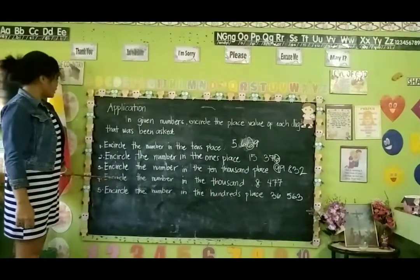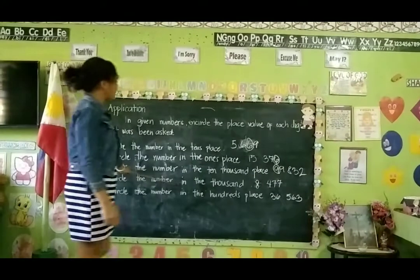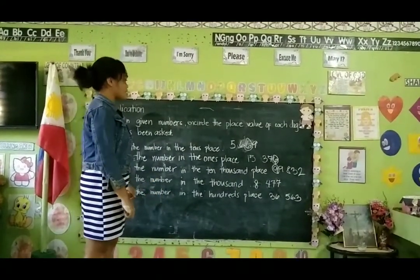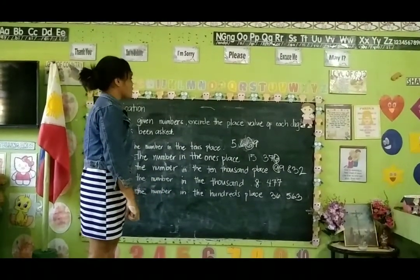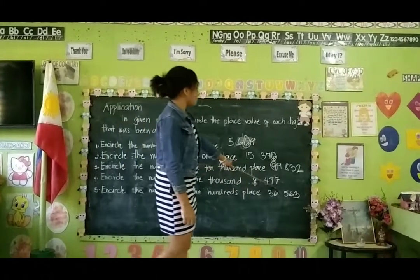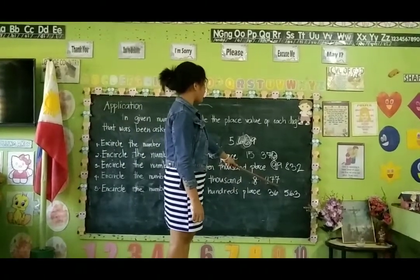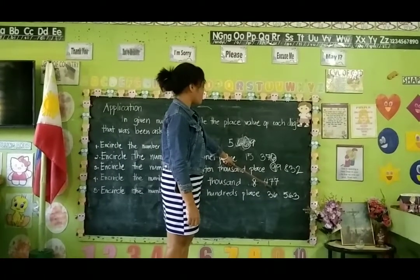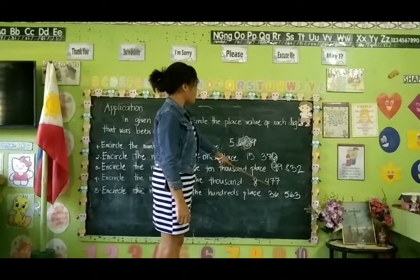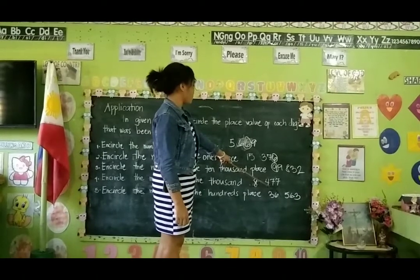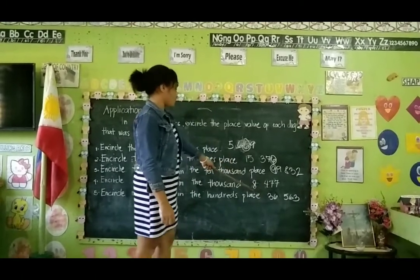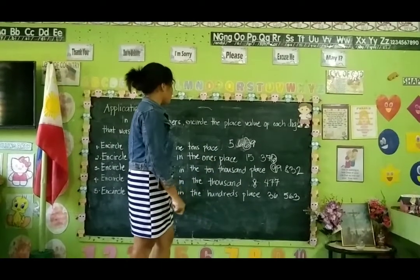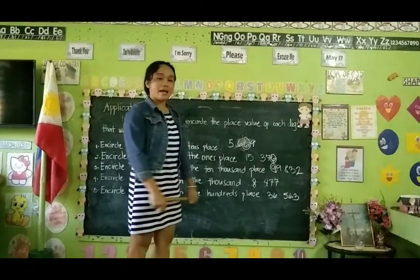Encircle the number in the thousands place — 8,477. 7 is for ones place, 7 is for tens place, 4 is for hundreds place, and 8 is for thousands place. So, the answer is 8.